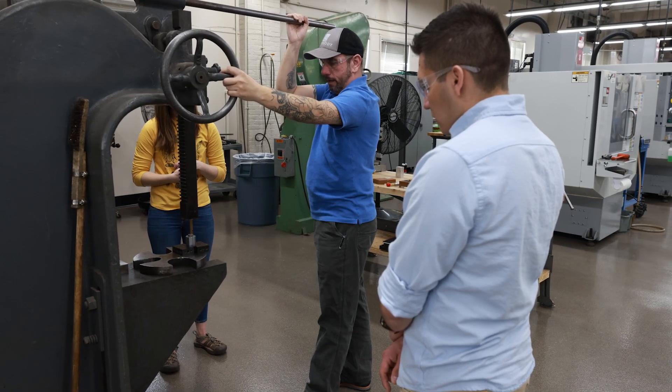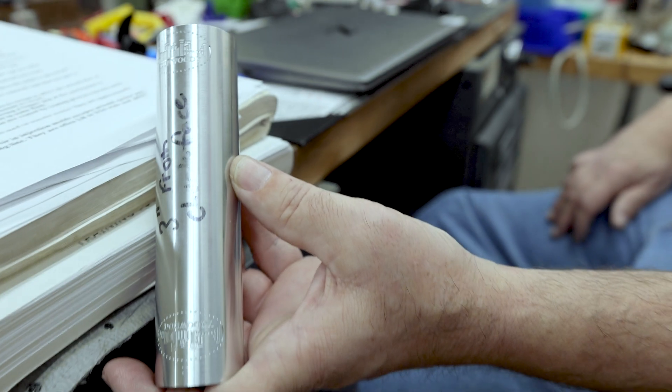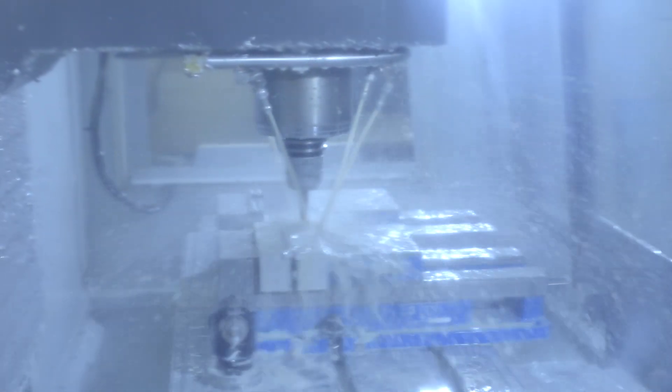We went to the machine shop to machine these side plates as well as the bottom plate. Brian also machined the roller design for us using the four-axis CNC.